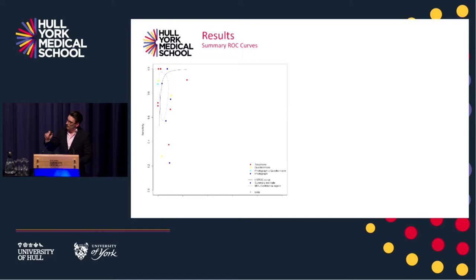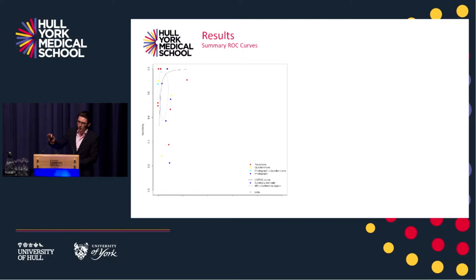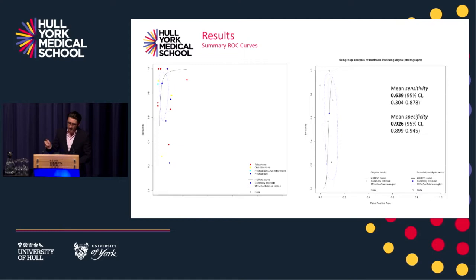This is a receiver-operator characteristic curve. A perfect curve would be an L-shaped curve in the top left corner, and a completely random test would be a diagonal line from bottom left to top right. What you can see is that this is actually pretty good — bordering a very, very good test. We did a subgroup analysis: if we take a photo, surely that must be better. Well, actually it's not — it makes it worse. The specificity dropped slightly to 92.6%, but the sensitivity dropped quite a way to 63.9%.